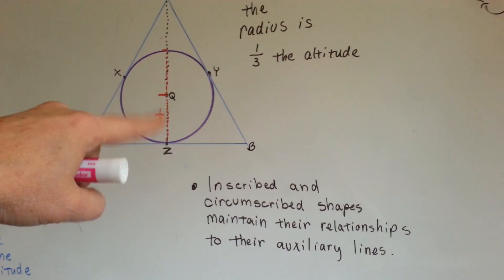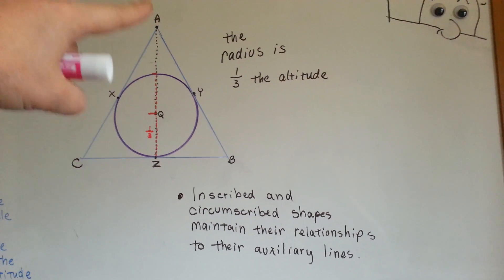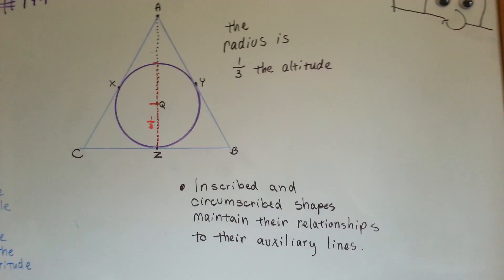So, this is the radius. It's one-third the height of the entire line az, which is the height of the triangle, the altitude of the triangle.